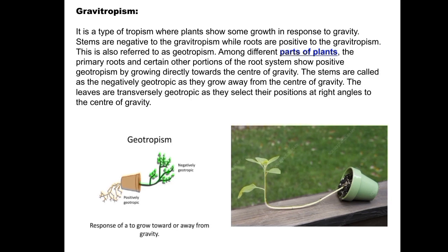Gravitropism, also known as geotropism, refers to growth movements induced by the stimulus of gravity. Secondary lateral roots and shoots show a weaker response to gravity. Roots grow towards gravity and are therefore positively geotropic, while shoots grow opposite to gravity and are negatively geotropic. Primarily, main roots always grow in the direction of gravity — positively geotropic — whereas main shoots grow upward, away from gravity — negatively geotropic.